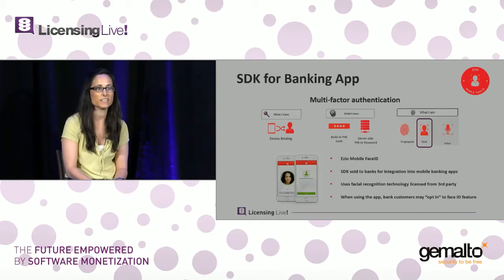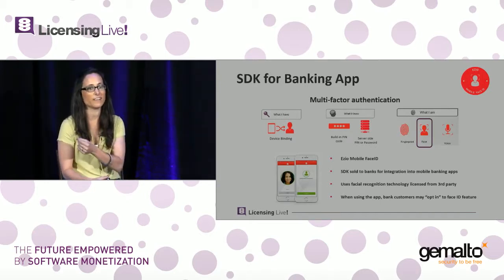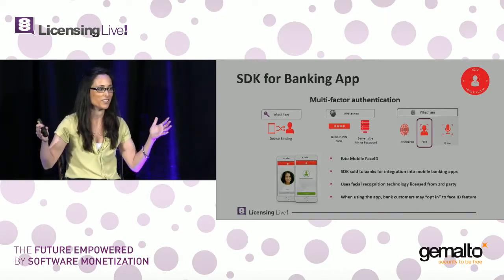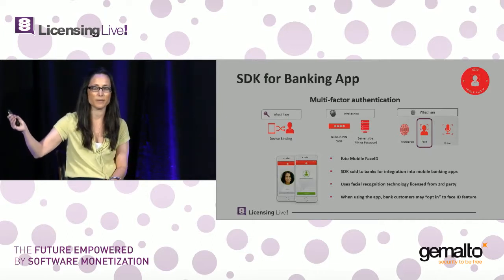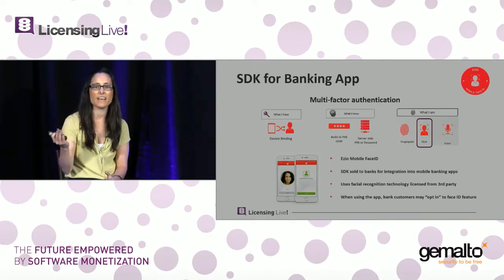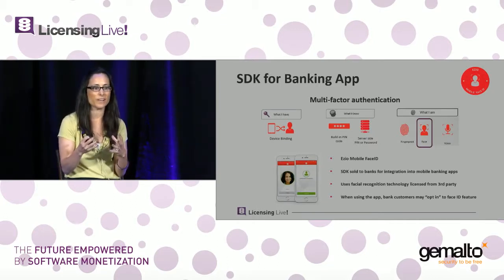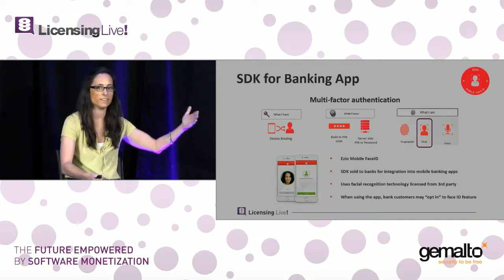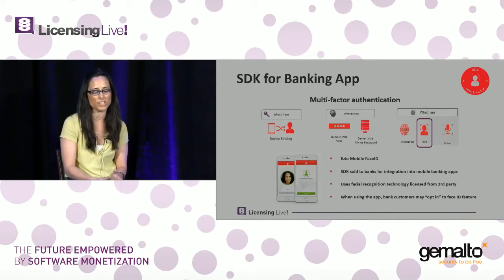The facial recognition technology itself did not come from Gemalto — we actually licensed that from a third party vendor. So there are multiple stakeholders in this chain: the third party vendor that provides the technology for facial recognition, which gets integrated into our SDK; we provide additional value add and sell it to the bank; it gets built into the mobile app; and then you have the end user. So four main stakeholders in the chain.